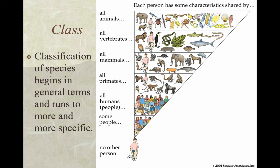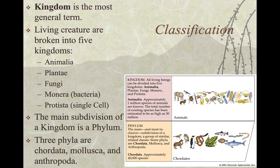Classification of species begins in general terms and runs to more and more specific. Kingdom is the most general term. Living creatures are broken into five kingdoms: Animalia, which is what we are; Plantae, which is plants; Fungi, which are funguses; Monera, which deals with bacteria; and Protista, which is single-celled animals. Bacteria are also single-celled but represent a different type of cell.